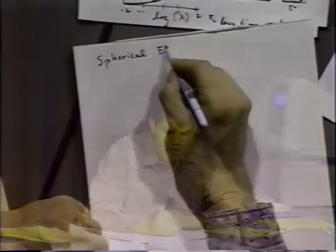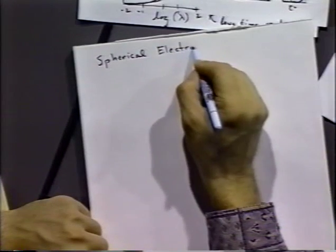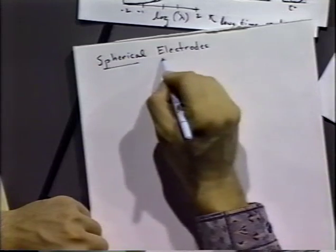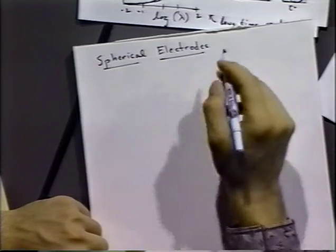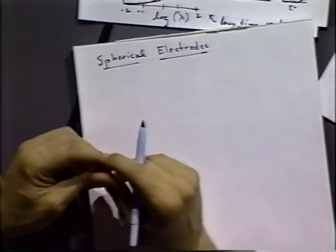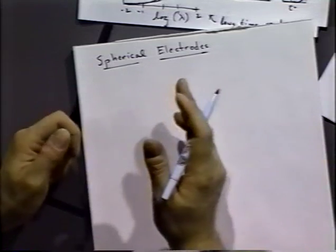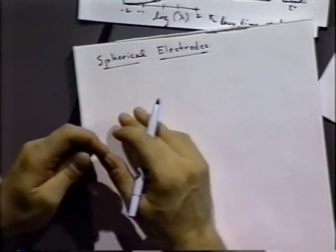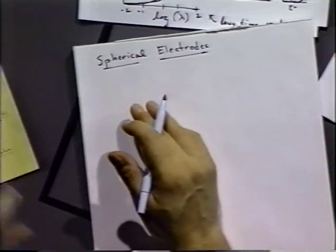There are many other types of electrodes, and very commonly used electrodes are electrodes that are spherical in shape. The students taking the class have already been assigned a problem in which they were asked to derive a Cottrell response for a spherical electrode and to see the difference.